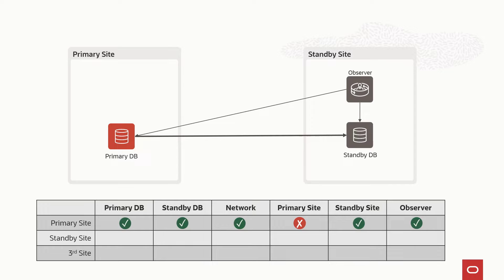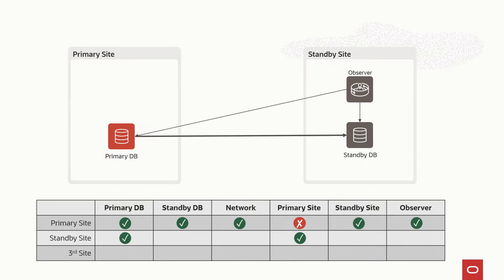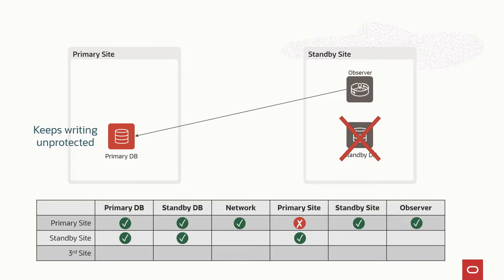What happens if we put the observer on the standby site? If I lose the primary database, I have an automatic failover, which is expected. This is also true if we lose the full primary site because the quorum is on the standby site with the observer and the standby database. If we lose the standby database, the observer will still have connectivity with the primary database, and the primary will keep writing without protection of the standby database.